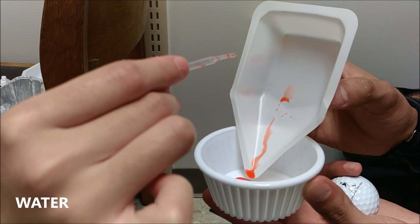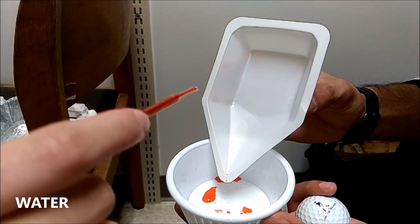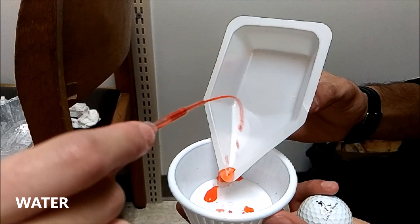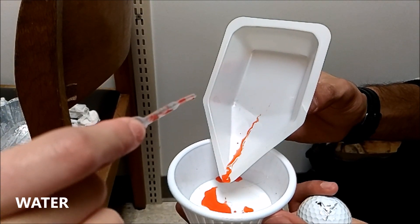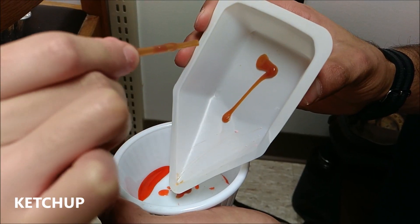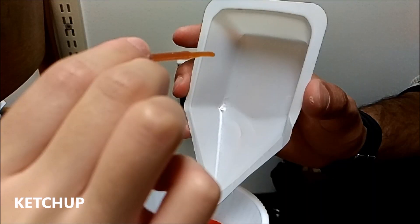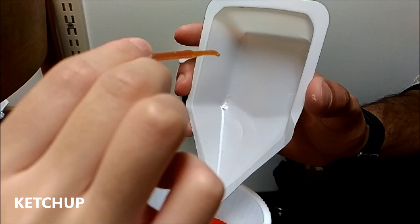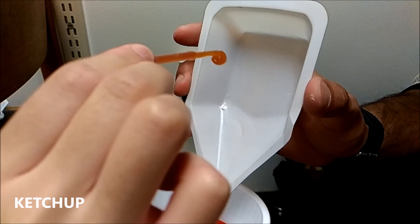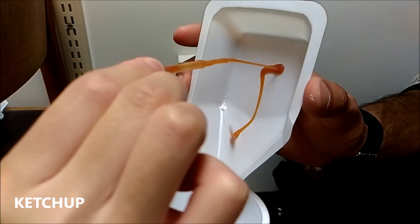Here, we have water with food coloring in a pipette compared to ketchup in a pipette. Intuitively, when we squeeze the pipette with the red water, it squirts out, hits the plastic, and flows down into the cup. When we squirt the ketchup out, it flows out like a liquid, but when it hits the plastic, it just sticks there instead of flowing down into the cup.